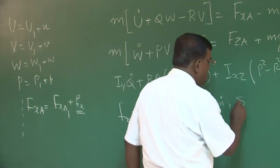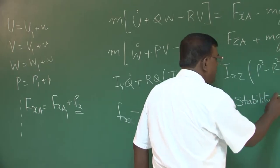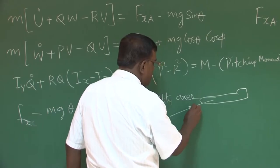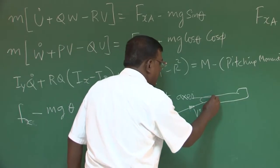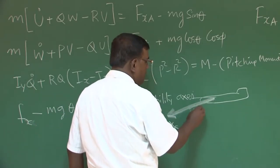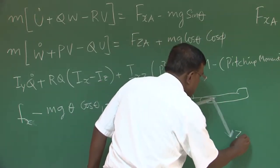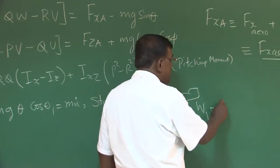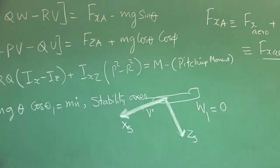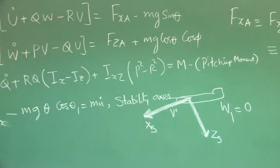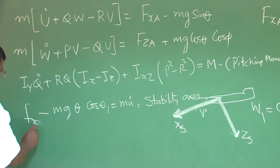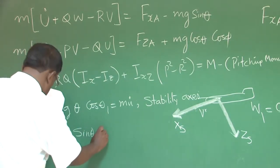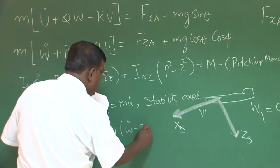We used the concept of the stability axis. If the plane is flying with total velocity V, we align the x-axis (xs) along V, so the z-axis also tilts accordingly. The advantage of the stability axis is that w₁ — the w-component at steady state — becomes zero, since x is along total velocity in the vertical plane. The second equation along z is: Fz − mg·θ·sin θ₁ = m·w-dot − q·u₁.